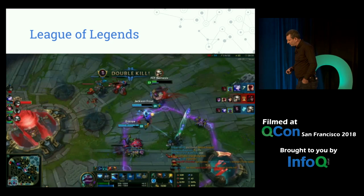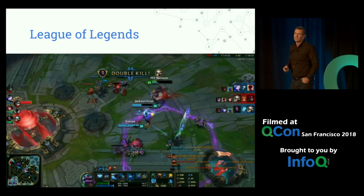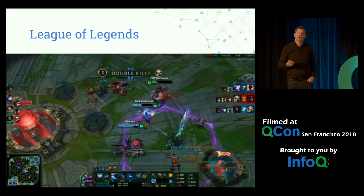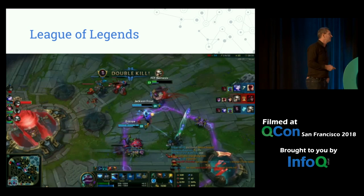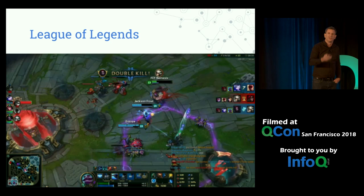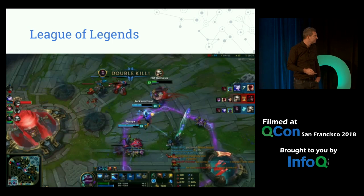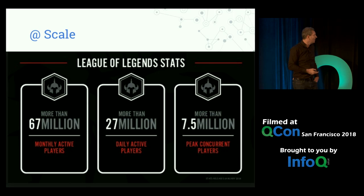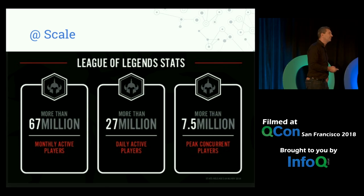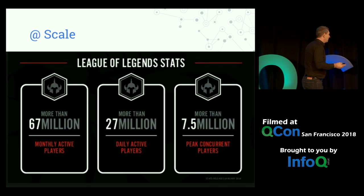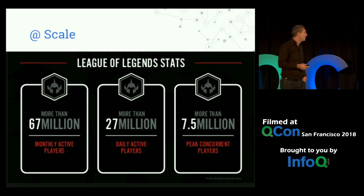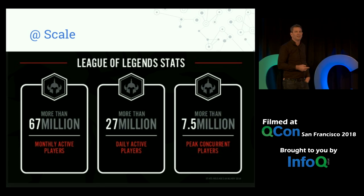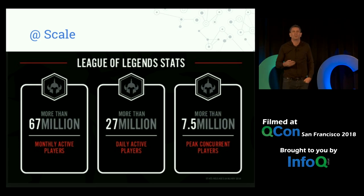To put that into context, in 2014 when we measured that, all of Halo — all the hours ever played on Halo up to that point, including all of the successor versions — were two billion hours. League of Legends is doing that every two months. These figures are from 2014, so you can extrapolate out from there. We had 67 million monthly active players, more than 27 million daily active players, and 7.5 million concurrents at peak — that was 10 million or more by the time I left.